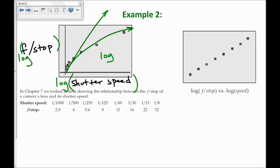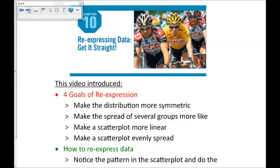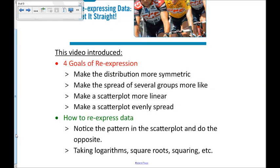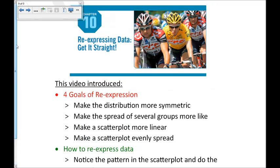Again, there are multiple correct ways to do this. There are four goals of re-expression: to make the distribution more symmetric, make the spread of several groups more alike, make a scatter plot more linear, and to make a scatter plot spread evenly throughout the data. And there's a bunch of suggestions and tips on how to re-express data. You notice the pattern in the scatter plot and do the opposite. Also, taking logarithms, square roots, squaring, doing those things, and finding one that gives you a very straight pattern in the scatter plot is what you're trying to do. Thank you so much for watching.